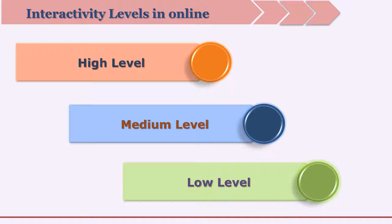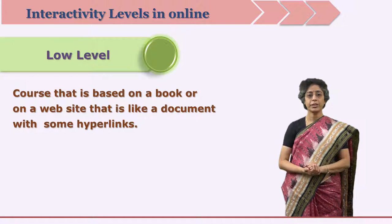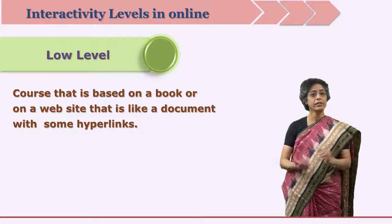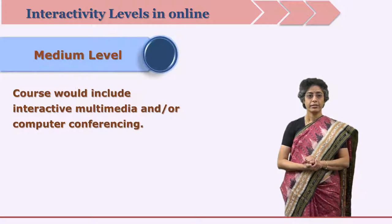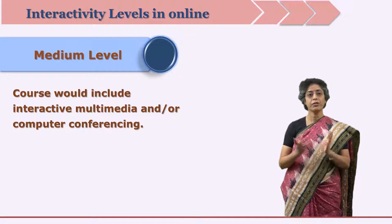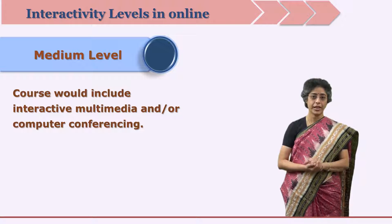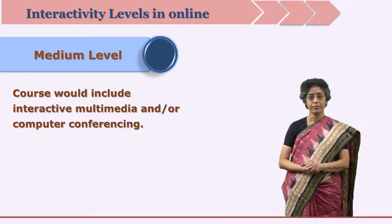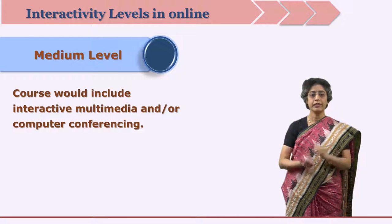Professor Rory Magrill has defined three levels of interactivity: high level, medium level, and low level. Low level interactivity material is like an e-book or a web page — the learner is merely navigating. When the learner is accessing an interactive multimedia package on CD, or if there is computer conferencing where teacher and learners can interact, the learner can ask questions and the teacher can answer. That is middle level interactivity.